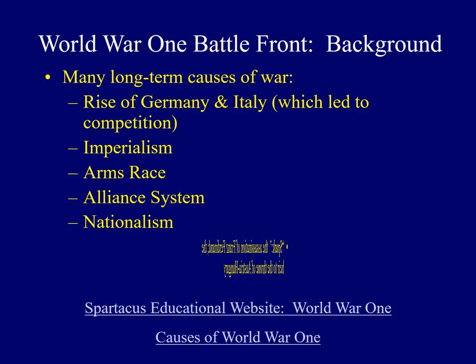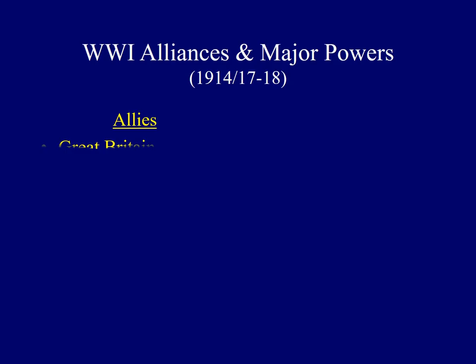The fighting began in 1914, and a major set of alliances pitted two sets of powers against another. The Allied powers were led by Great Britain, France, and Russia. The Central powers were led by Germany, Austria-Hungary, and Turkey.